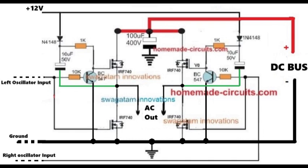This in turn enables the high-side N-channel MOSFETs to conduct freely and efficiently, regardless of the applied drain voltage level. This may not be possible if P-channel MOSFETs are used. Although a high-side P-channel MOSFET wouldn't require bootstrapping, its main disadvantage is that its drain voltage cannot exceed the gate voltage. This simply means that if the oscillator IC output is 12V, then the load voltage cannot exceed 12V — a significant drawback that is completely eliminated when N-channel MOSFETs are used.